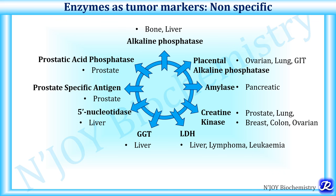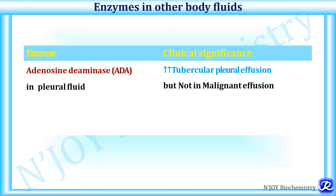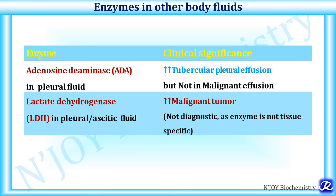Various enzymes are estimated in other body fluids. Adenosine deaminase (ADA) levels are estimated in pleural fluid and are indicative of tubercular pleural effusion but not increased in malignant effusion. Lactate dehydrogenase levels in pleural fluid and ascitic fluid are increased in malignant tumors, though it is not diagnostic as it is not tissue-specific.